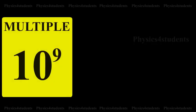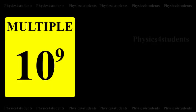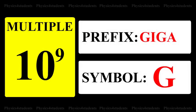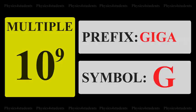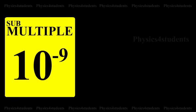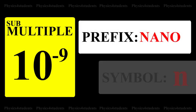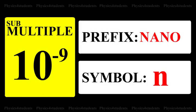10 raised to 9: prefix is Giga, symbol is G. Submultiple is 10 raised to minus 9: prefix is Nano, symbol is N.